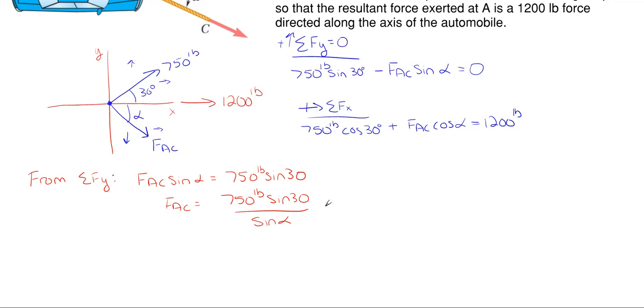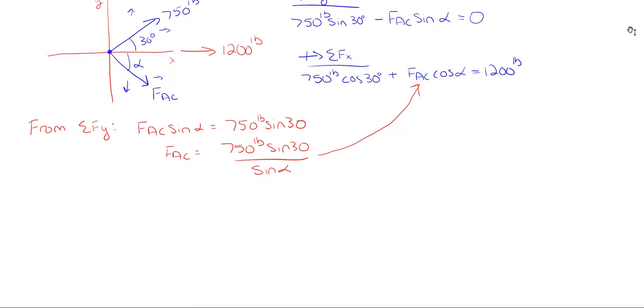Well, now that I have everything in terms of FAC, what I can do is take this portion and plug it into here in my x equation, and then everything will only be having alpha as the unknown. So let's do this. So rewriting the Fx equation with that substitution, I end up with 750 pounds cosine of 30 plus my new FAC, which is 750 sine of 30 divided by the sine of alpha, all of that is times the cosine of alpha, and that is equal to 1200 pounds.